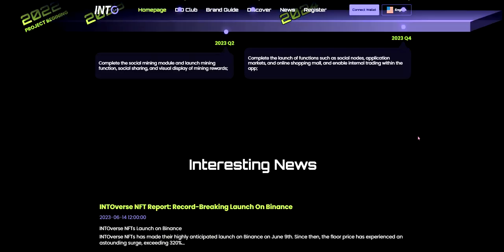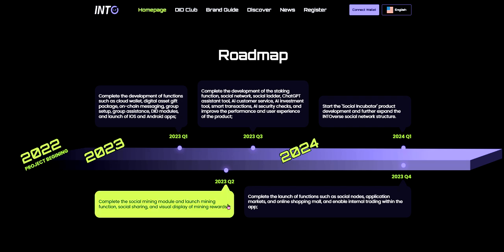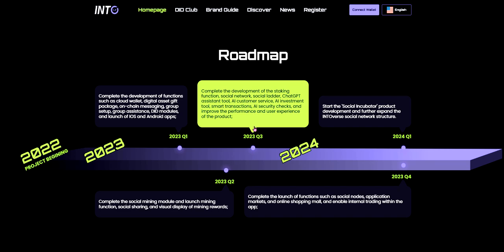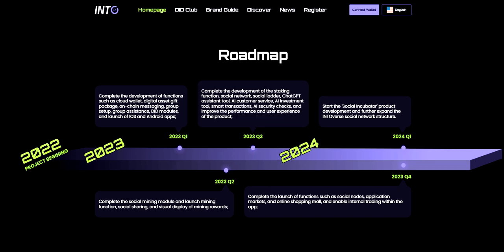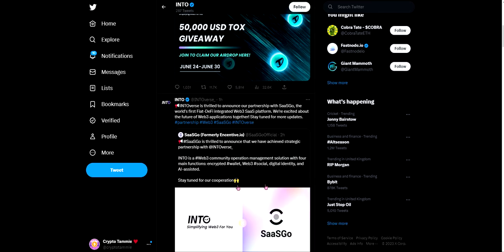Looking at their roadmap, I'm not sure exactly where they are but probably around Q2–Q3 of 2023. Features include: completing the social mining module and launching mining functions, social share and visual display of mining rewards, completing staking functions, social network and social ladder features, ChatGPT assistance tool, AI customer service, AI investment tool, smart transactions, security checks, and improved performance and user experience.